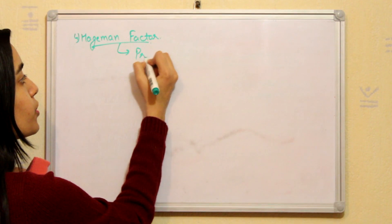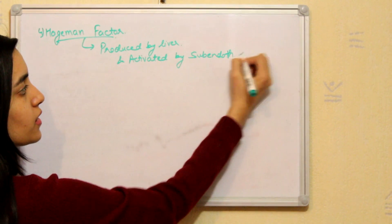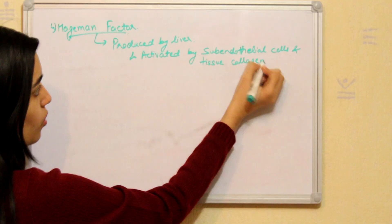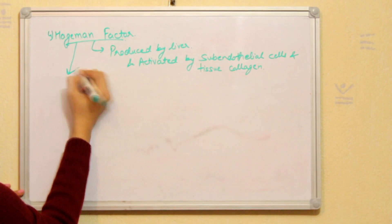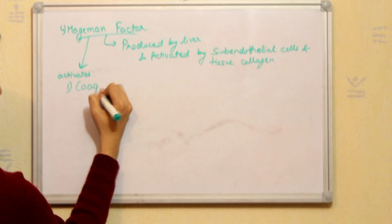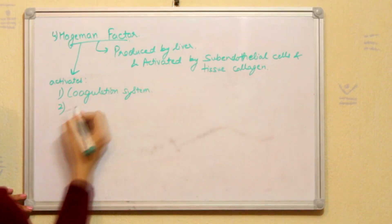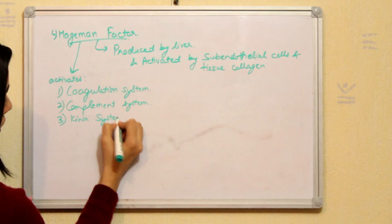The next factor that mediates acute inflammation is Hageman factor. This factor is produced by liver and activated by subendothelial cells and tissue collagen. So what is the mechanism of Hageman factor? It activates three types of systems. First is coagulation system. Second is complement system. And third is kinin system.